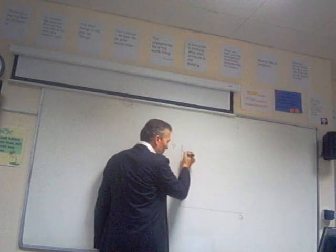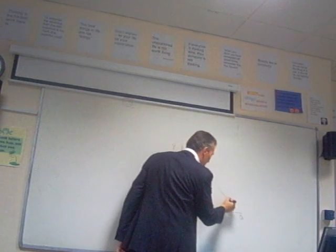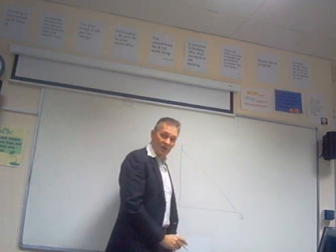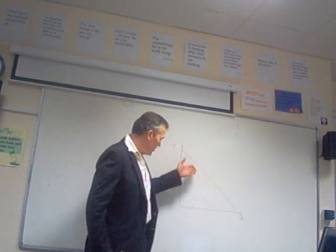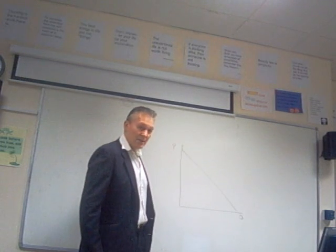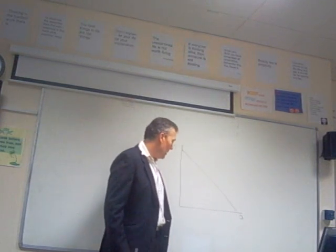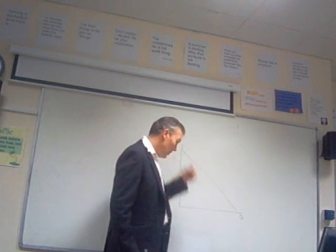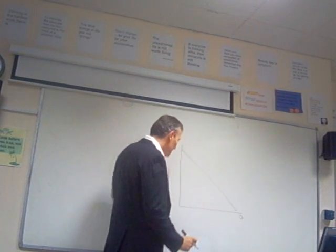Next, we draw our typical downward sloping demand curve, which shows that as price declines, the quantity demanded by the public rises.